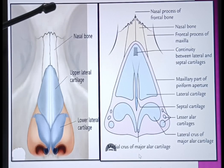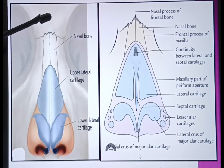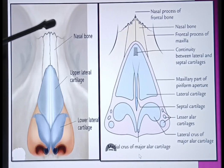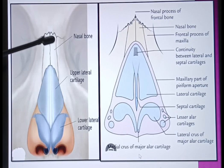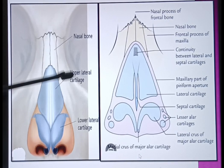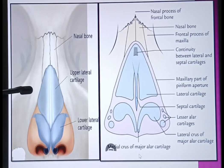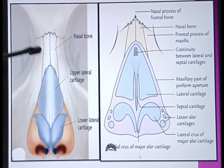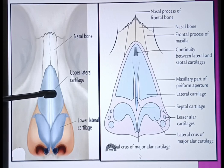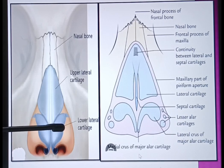This is the frontal bone through its nasal process. These are the two nasal bones, and these are the maxilla through their frontal processes. The blue color represents the cartilages — these are the upper ones and these are the lower ones.